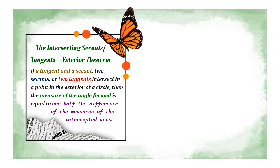The first case is a combination of a tangent and a secant. As you can see, we have circle E with tangent segment BD and secant segment AD. If we are asked to find the measure of the angle formed at the exterior point, we simply get half the difference of the measures of its intercepted arcs.